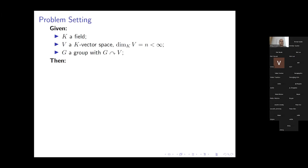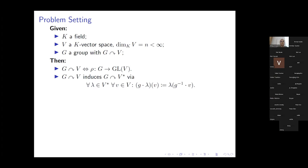The problem we want to address: given a field K and a finite-dimensional vector space over this field, we consider an action of a group on this vector space. A group action on the vector space is the same as a representation of this group on the general linear group of the vector space. This action on V in turn induces an action on the dual space, called the dual action, or in representation terms, the contragredient or dual representation.